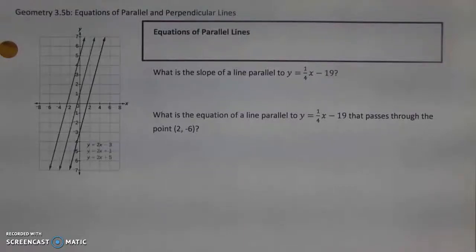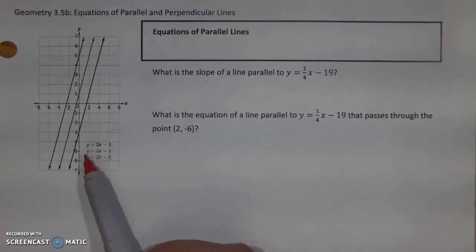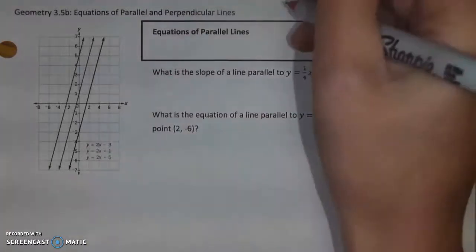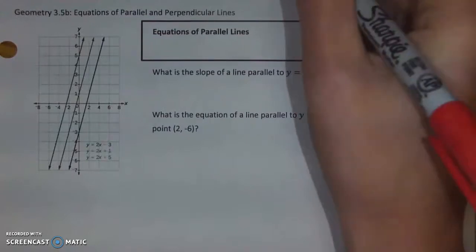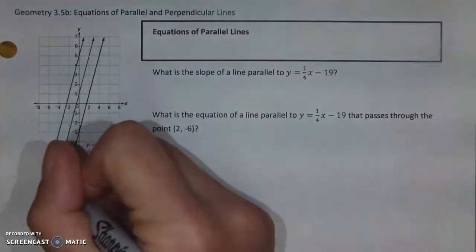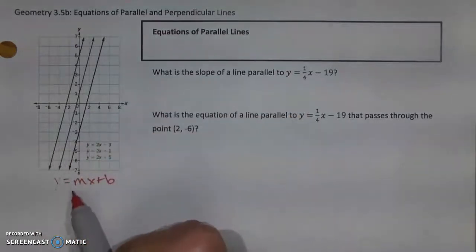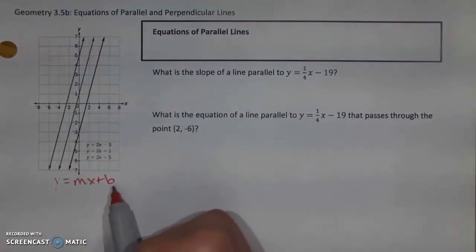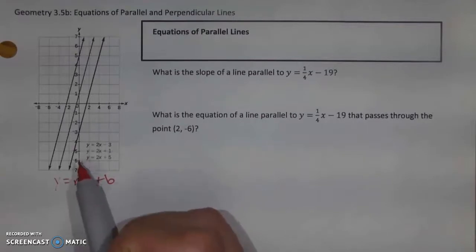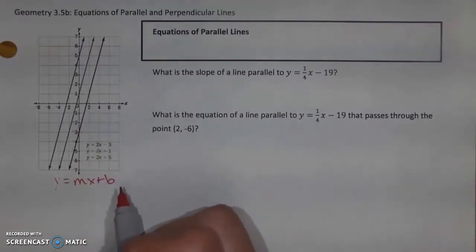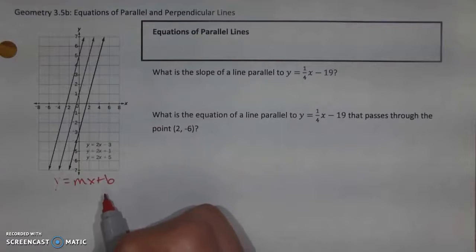Hello everyone, today we're going to be looking at the equations of parallel and perpendicular lines. Earlier we already looked at what it takes to have the equation of a line, and we looked at the classic form — slope-intercept form — where we have y is equal to mx plus b, where m is the slope or movement, and b is the intercept for the y-axis, or the starting point of the line.